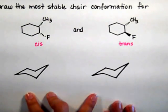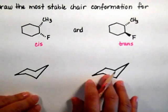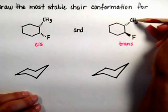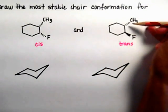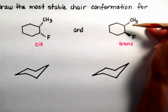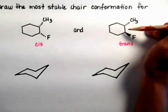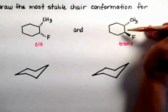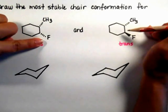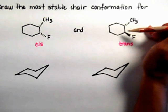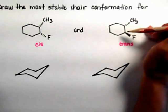I want to go to the most stable chair automatically, so what I'm going to do is that I'm going to try to compare the size of my two substituents, because I know that the more substituents I have equatorial the better, but since they're both different, the bigger substituent would be much better on an equatorial position.